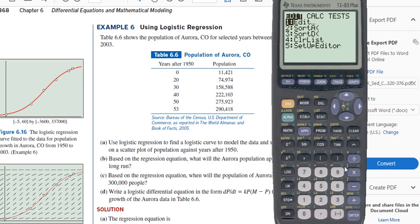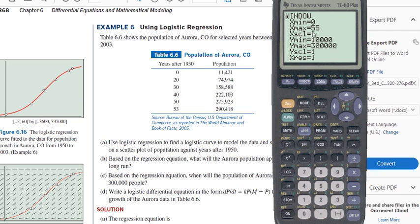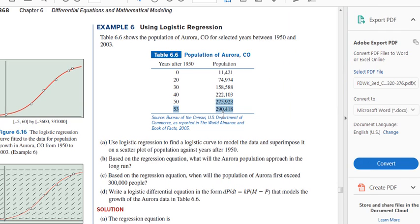All right, so we have these, but let's just go over the state, so I've got these values inputted, and you're going to want to go to Y equals, clear everything that's on there. I did go to the window as well, set the window parameters to just, I went from 0 to 55, so I could see all those, and then from 10,000 to 300,000, so I could see all these.